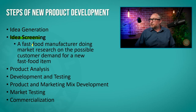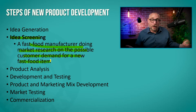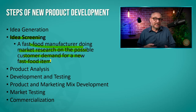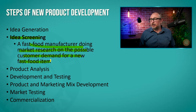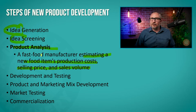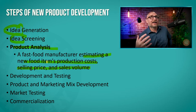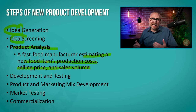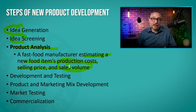Then we go ahead and screen some ideas — research the possible customer demand for the new item. When I lived in Japan, at McDonald's there would be squid dishes. So they want to screen these ideas and test them out. Then they do a product analysis: estimating the new food's production costs, selling price, and sales volume. Even if it's a great idea, you need to look at how much it costs to produce and how much people are willing to pay for it. Is there a sufficient margin, and would it sell enough to get a return on investment?